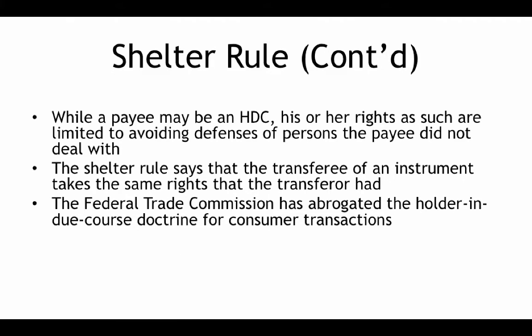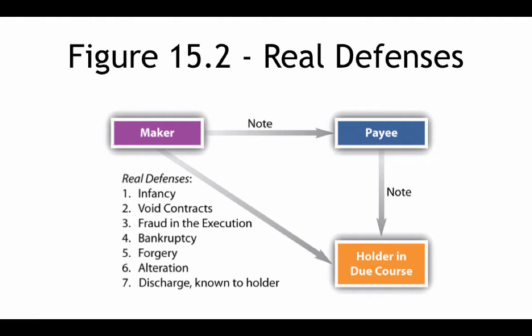While a payee may be an HDC, his or her rights as such are limited to avoiding defenses of persons the payee did not deal with. The shelter rule says that the transferee of an instrument takes the same rights the transferor had. The FTC has abrogated the HDC doctrine for consumer transactions. These are the real defenses that are effective even against an HDC — the scenario where a note is given to the payee and the note is negotiated to the HDC, and the HDC takes it subject to these real defenses.